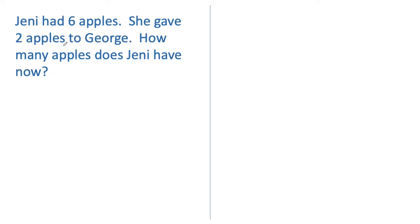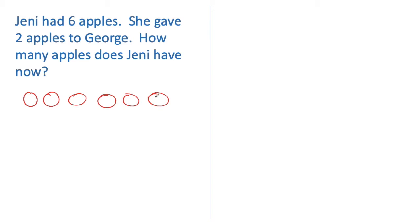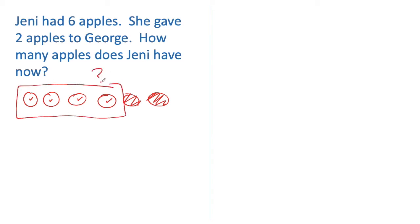Now it's time to plan. Let me take out my counters. Jenny had six apples — one, two, three, four, five, six apples. She gave two apples to George. That means she gave part of these apples away to George — this apple and this apple. Now we want to know how many apples Jenny has now. Jenny still has this apple, this apple, this apple, and this apple. I'm going to count the apples Jenny has left, and that's what I don't know.